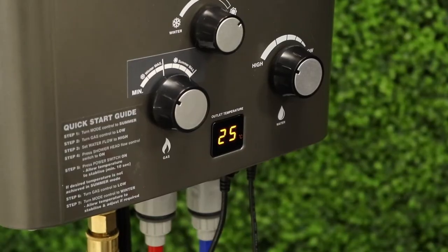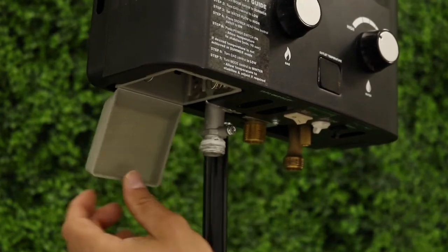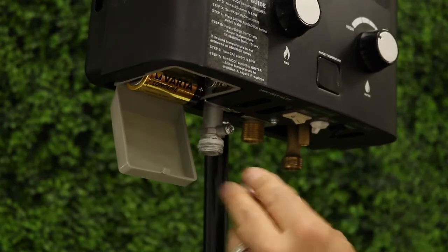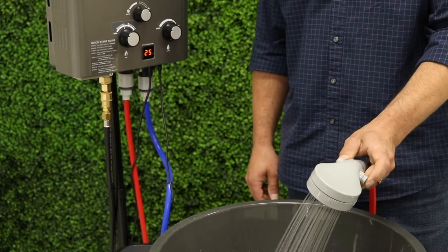Once lit the LED display will show the water temperature as running through the unit. If you don't hear the electronic ignition clicking, check your batteries are inserted correctly or that they are not flat. If you ever have any issues simply follow these steps again and your unit should operate correctly.